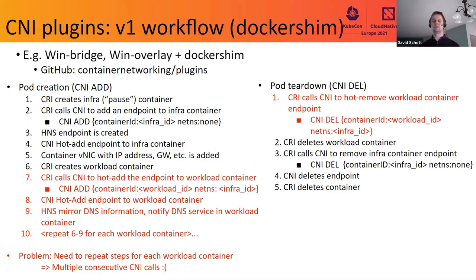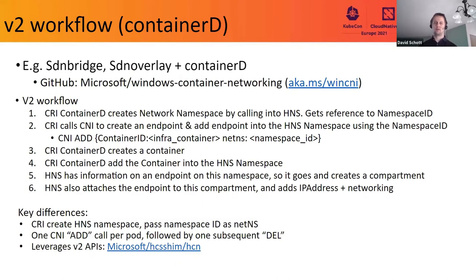For completeness, there are also multiple consecutive CNI calls for pod teardown on the Docker Shim workflow. This previous problem was overcome by introducing a new HNS entity called a namespace. The namespace contains a reference to the network compartment unique to a pod, the HNS endpoint, and containers placed there. This enables us to update the workflow so that there is only one CNI add call per pod creation. Sample plugins enlightened to use this workflow can be found at aka.ms/wincni.